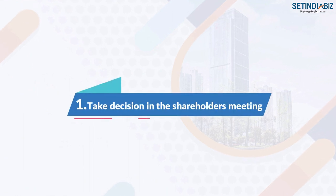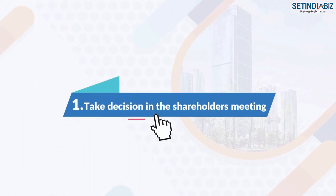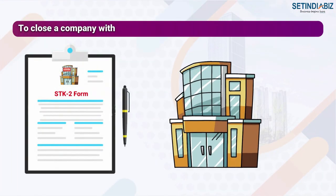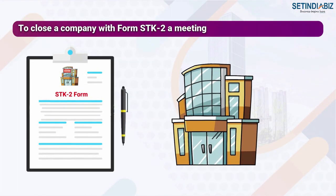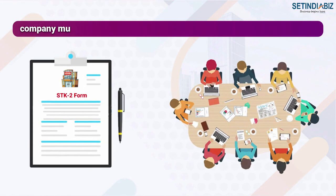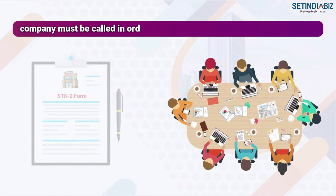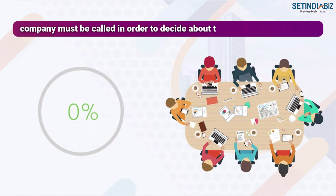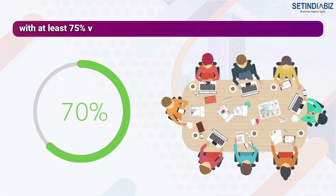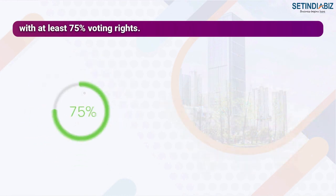Step 1: Take a decision in the shareholders meeting. To close a company with form STK-2, a meeting of the shareholders of the company must be called in order to decide about the closure with at least 75% voting rights.